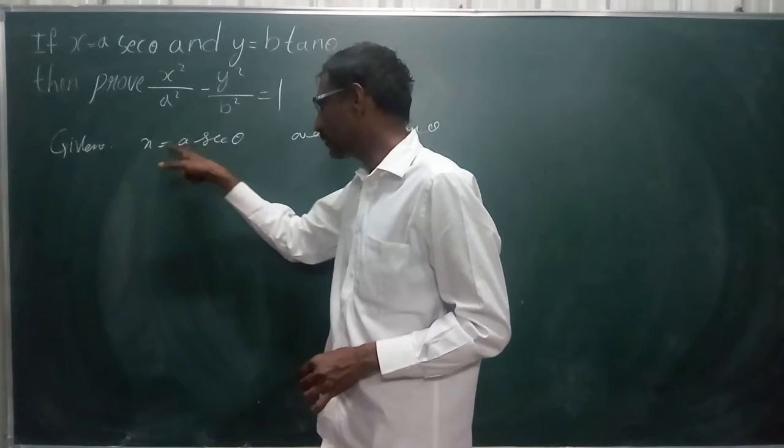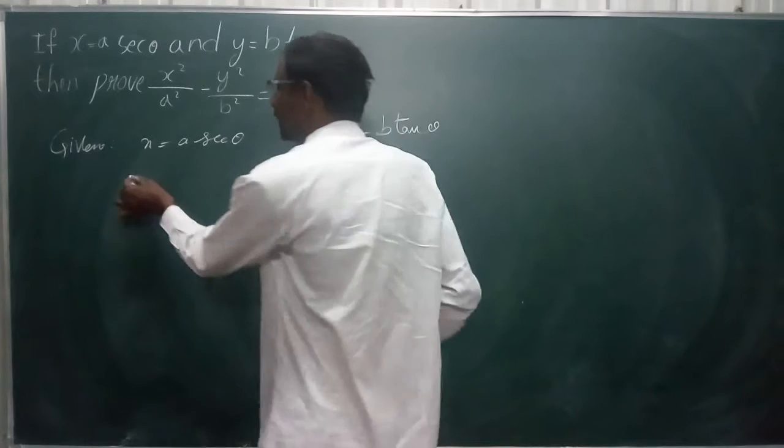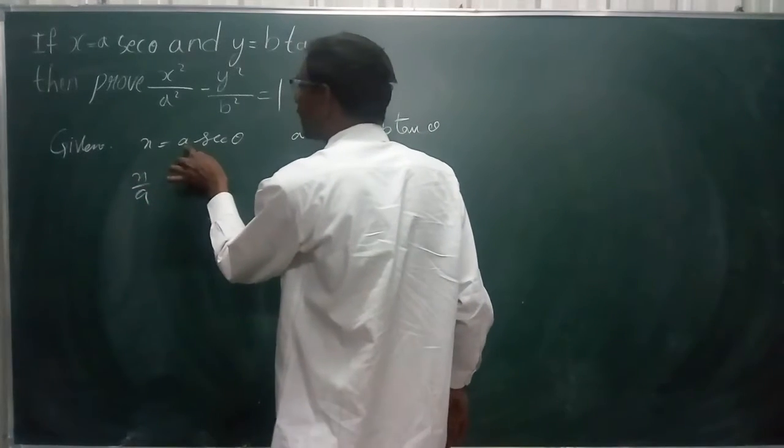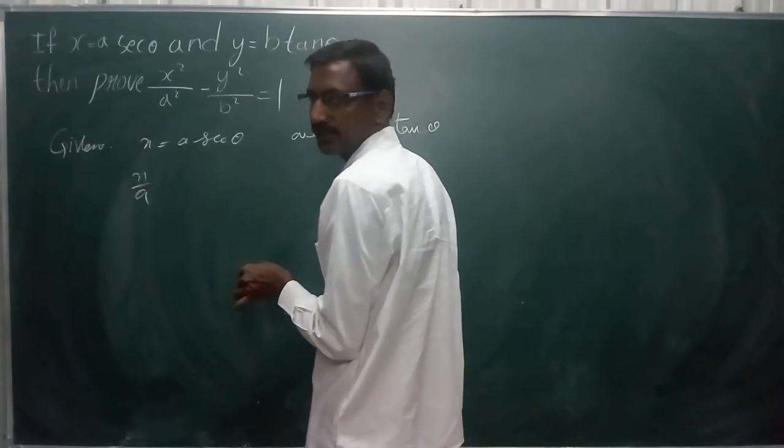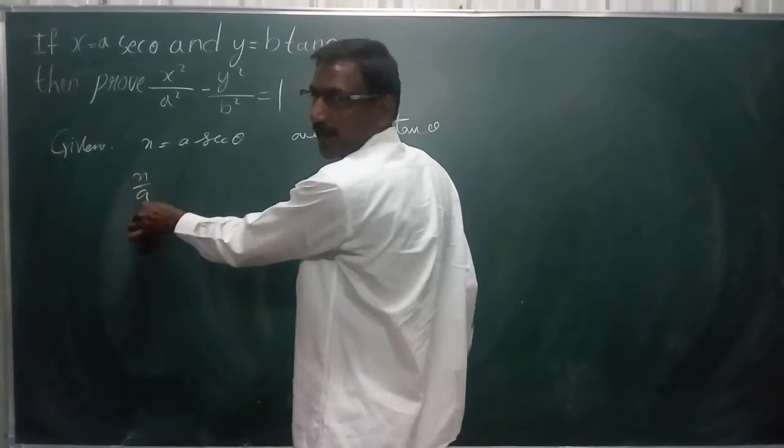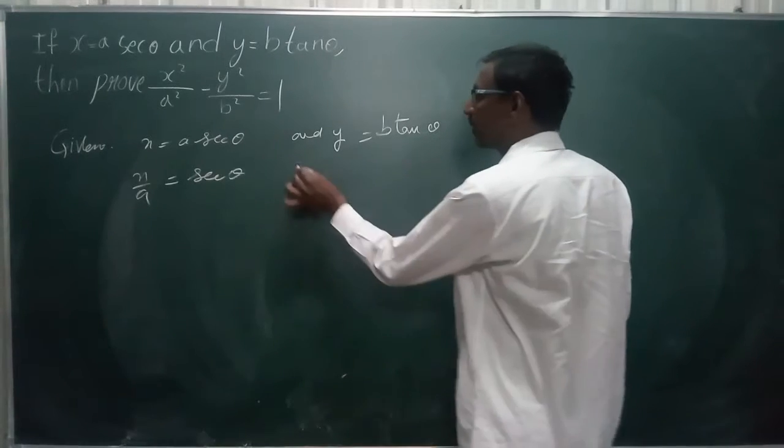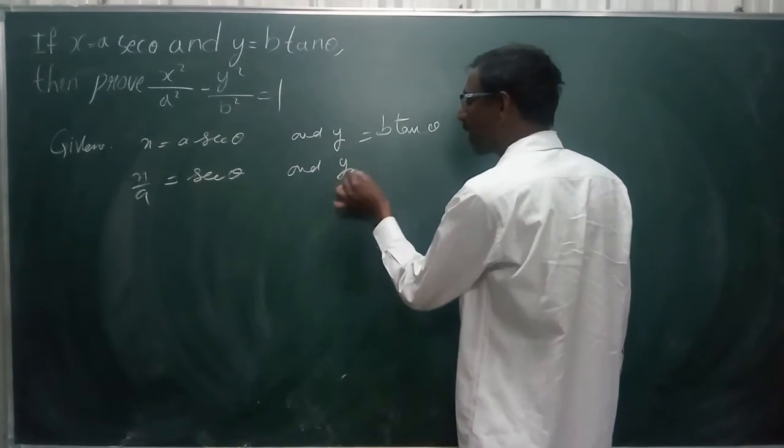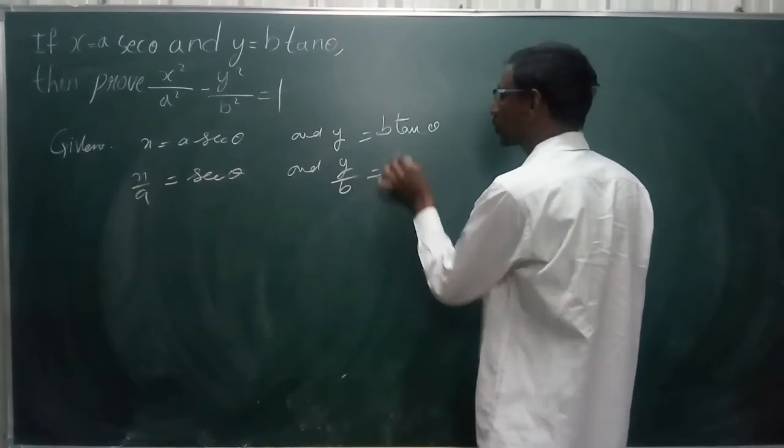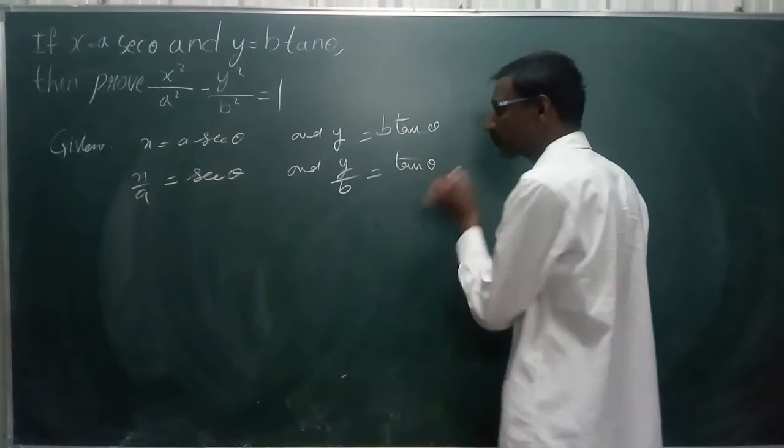Here I would like to take x by a because a is multiplied on both sides. x by a is equal to sec theta. Similarly here, y by b is equal to tan theta.